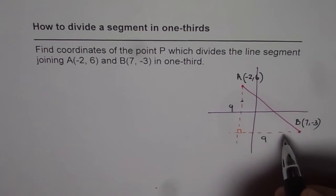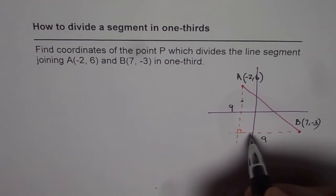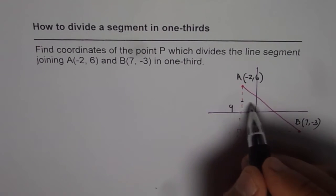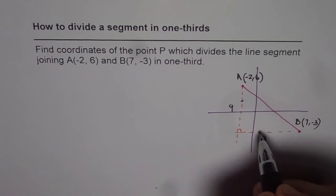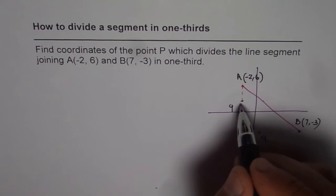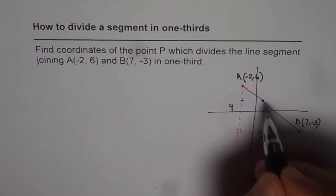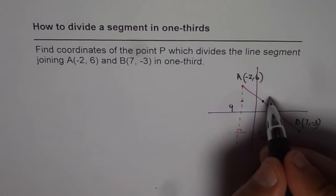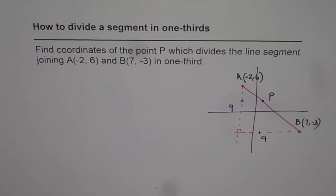So if I divide this horizontally in three equal parts, then let's say this is here. If I join these two points, we get a point on the line AB. That should be the point P.